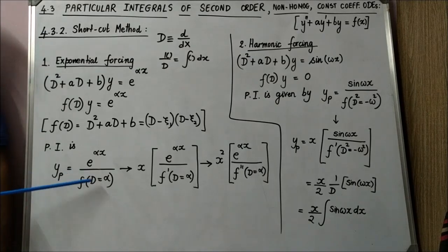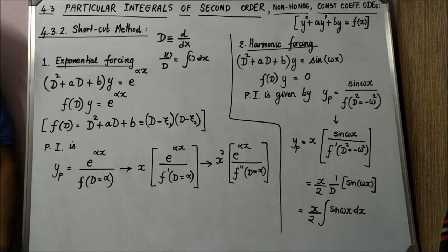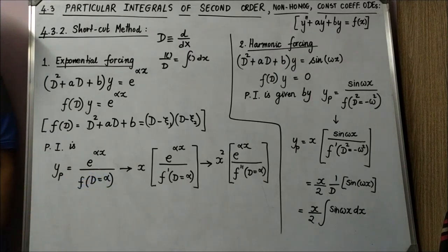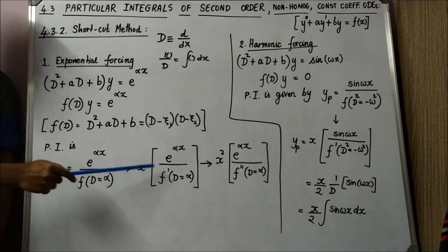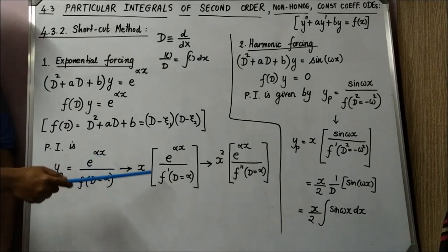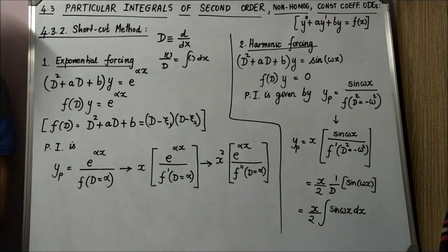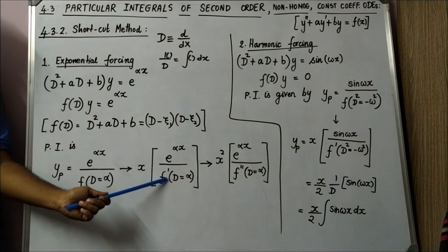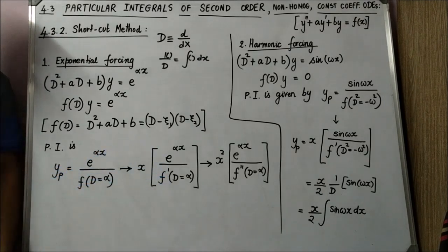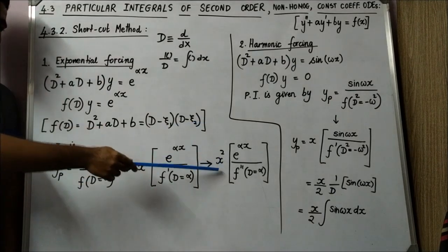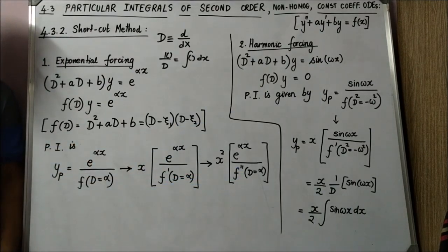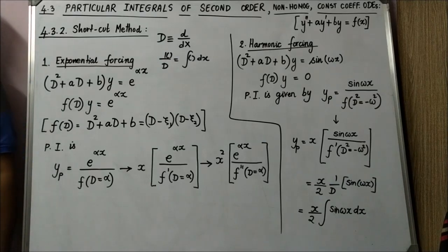If substituting D = α makes the denominator zero, multiply by x outside the operator, differentiate the denominator with respect to D, and then substitute D = α again. If the denominator is still zero (repeated root), repeat the process — multiply by x again and differentiate the denominator once more. This shortcut method is strongly recommended for exponential forcing in exams, as it gives the answer very quickly.